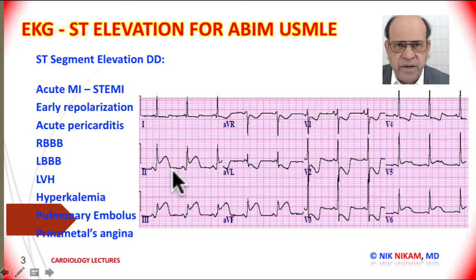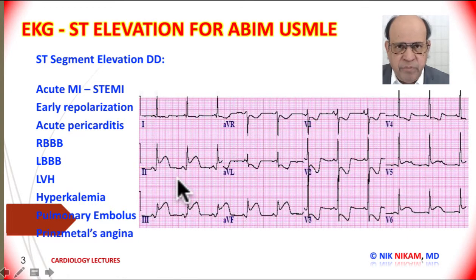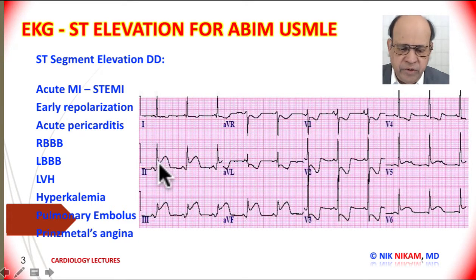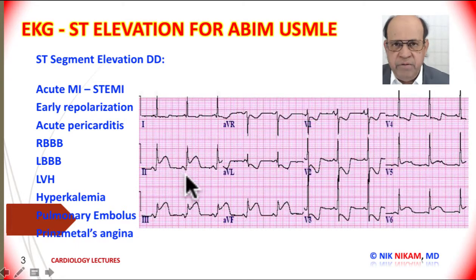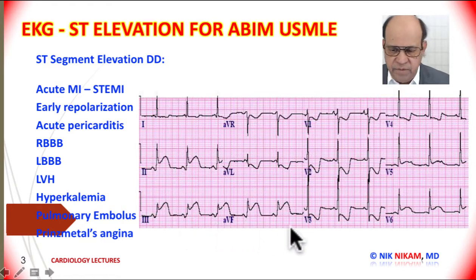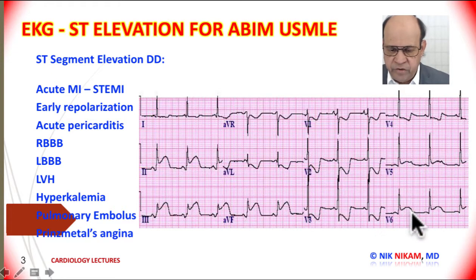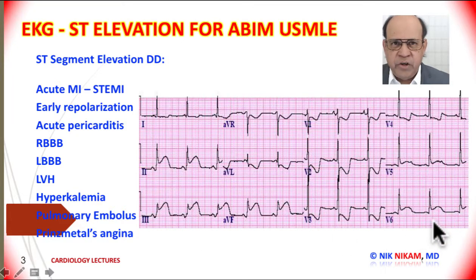The ST segment is lifted almost 3 to 4 mm and it imperceptibly blends with the upstroke of the T wave. This is characteristic of an acute myocardial infarction. In an acute MI, the ST segment elevation goes straight up and blends with the upstroke of the T wave. We see ST elevation in leads 2, 3, AVF, and to a certain degree in V5 and V6. This represents an inferolateral acute myocardial infarction, or STEMI.